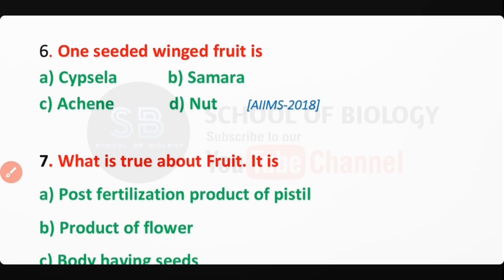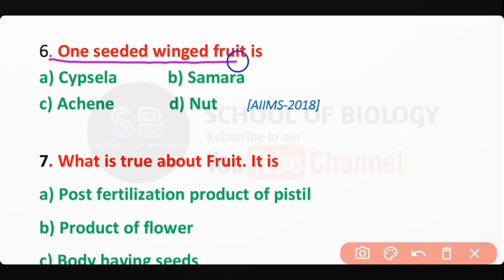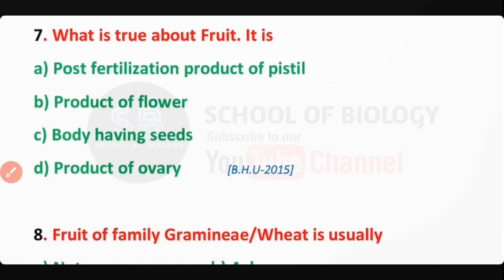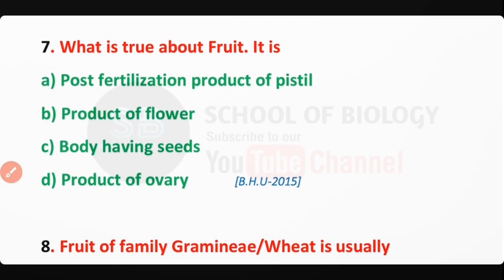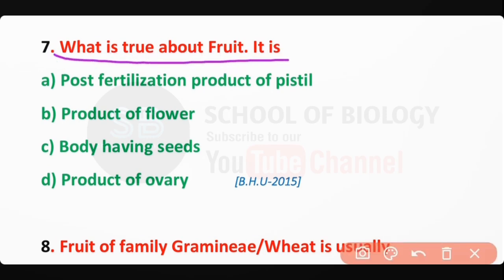Q6: A one-seeded winged fruit is known as a samara — correct answer is option B. Q7: What is true about a fruit? It is actually the product of the ovary — correct answer is option D.